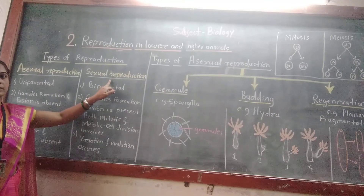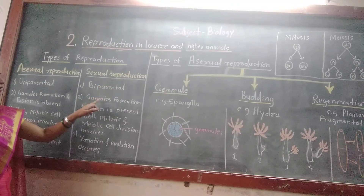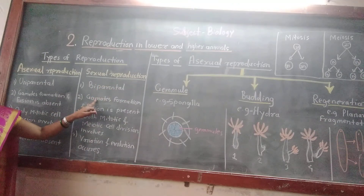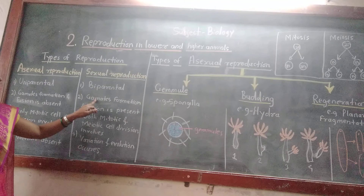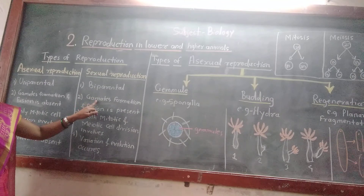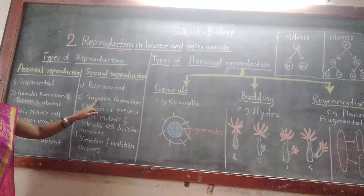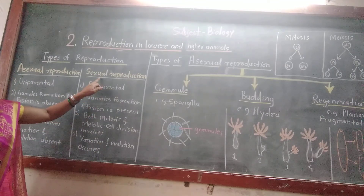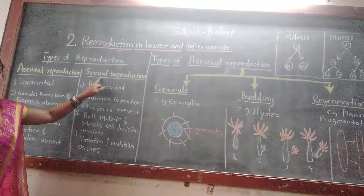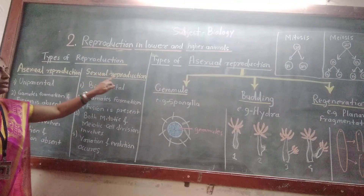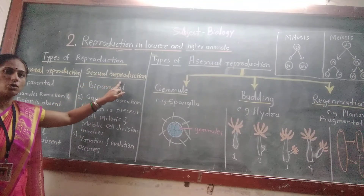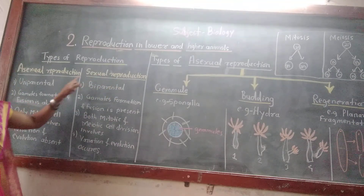Why is it called amphimixes? Here, two gametes — that is, sperm and egg — unite together to form a zygote. This mechanism is called amphimixes. Therefore, sexual reproduction is also called amphimixes.